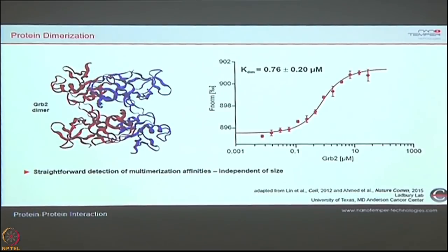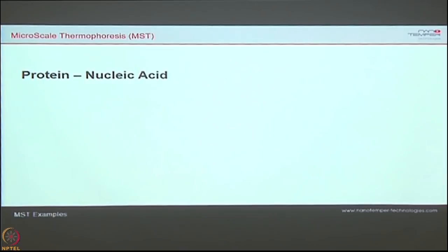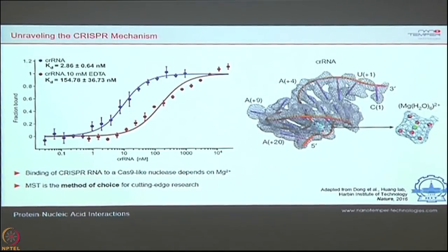Now let me show some application examples. First, dimerization: when the same protein interacts with itself to become a dimer, this is extremely difficult to study with SPR or ITC because immobilizing and running the same protein generates artifacts. Here, by labeling one copy and titrating the same protein, you can determine the dimerization KD cleanly. Second, protein-nucleic acid interactions: in a CRISPR paper published in Nature, the RNA-nucleus protein interaction was studied and MST was cited as the only biophysical technique used to determine binding affinities.